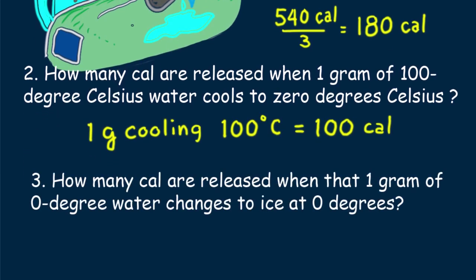Question 3. How many calories are released when that gram of 0 degrees Celsius water changes to ice at 0 degrees Celsius? Recall this value from my graph? That's right. 80 calories for 1 gram of ice water.